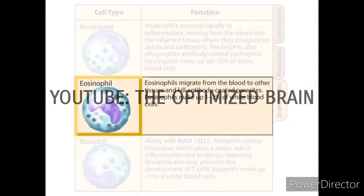Eosinophils migrate from the blood to other tissues and kill antibody-coated parasites. Eosinophils make up 1 to 3 percent of white blood cells.